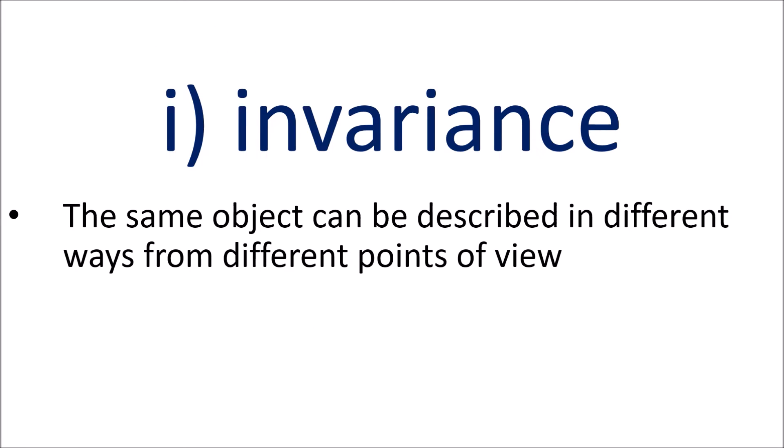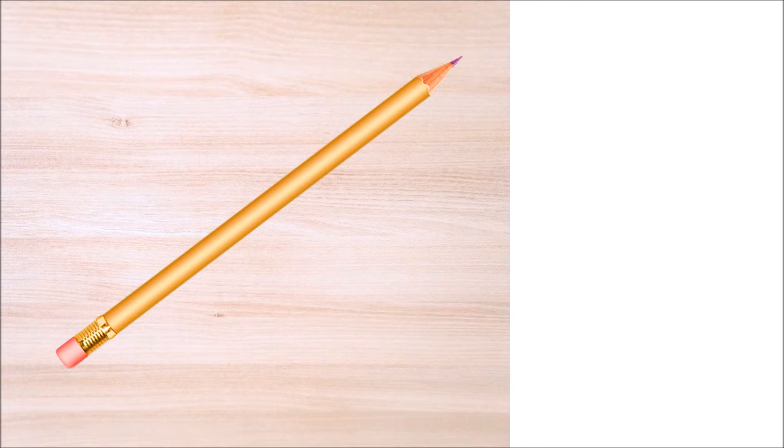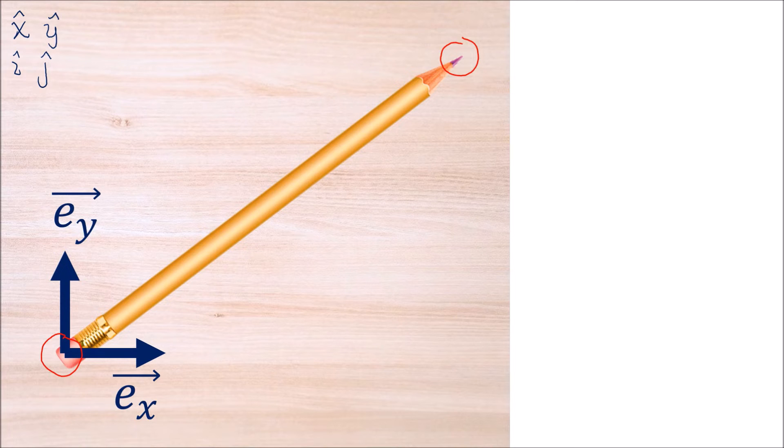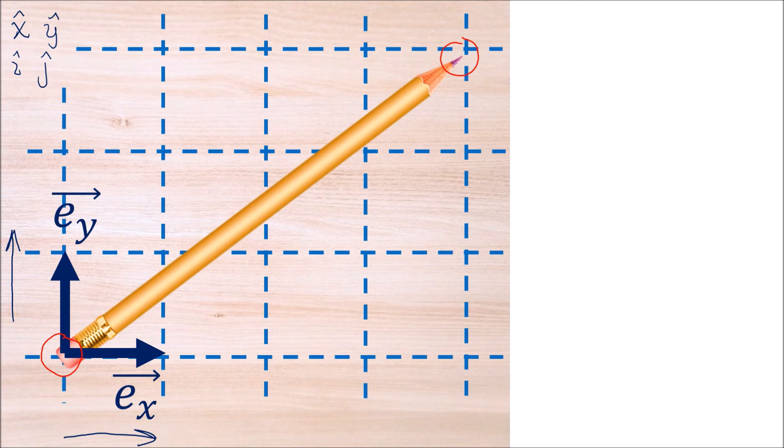So let's start off by talking about the invariance of vectors, or how the same vector can be described in different ways from different points of view. Let's take a look at using vectors to describe the separation between points in a flat 2D plane. For example, if we have a table with a pencil sitting on it, we can describe the separation between the pencil's eraser and the pencil's tip using some basis vectors, EX and EY. You might have heard of these vectors called by other names, like X hat and Y hat, or maybe I hat and J hat, but their names aren't too important. EX gives us one unit in the horizontal direction, and EY gives us one unit in the vertical direction. EX and EY basically give us a coordinate system for the 2D plane. And we can add together EX and EY in different amounts to get from the pencil's eraser to the pencil's tip.